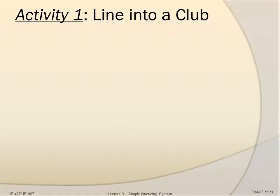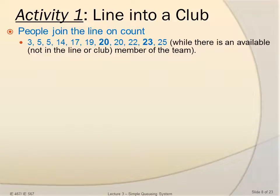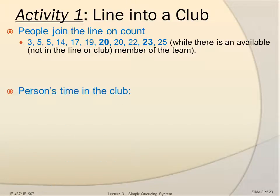Let me present an example of Activity 1. People join the club on counts 3, 5, 5, 14, 17, 19, 20, 20, 22, 23, and 25, while there is an available member of the team — in other words, not a member that is already in line or in the club.